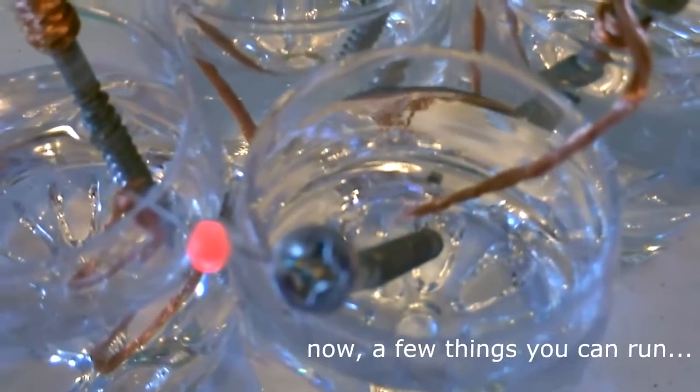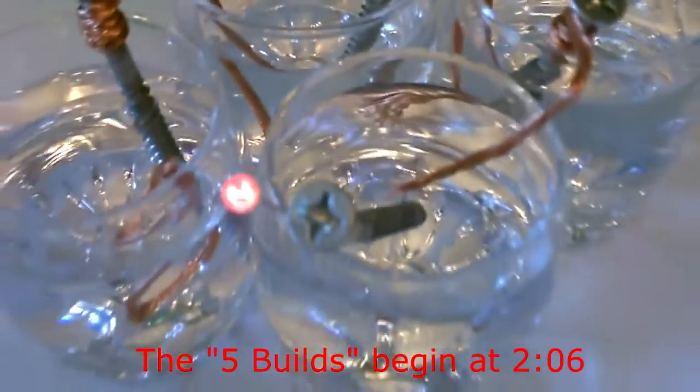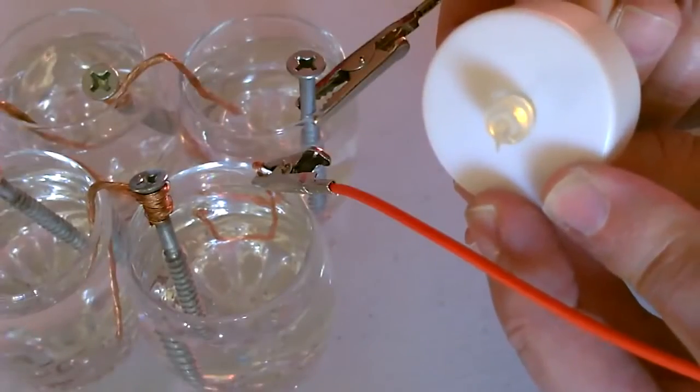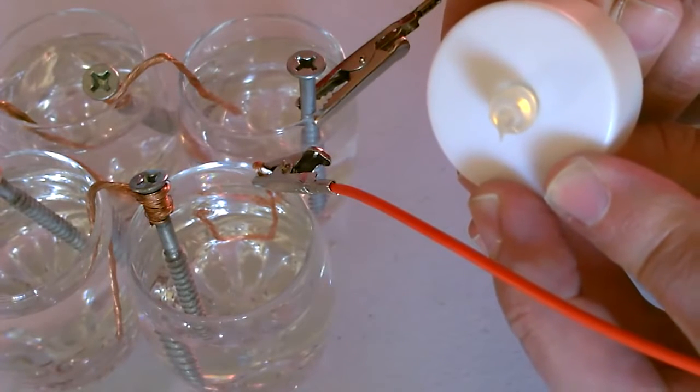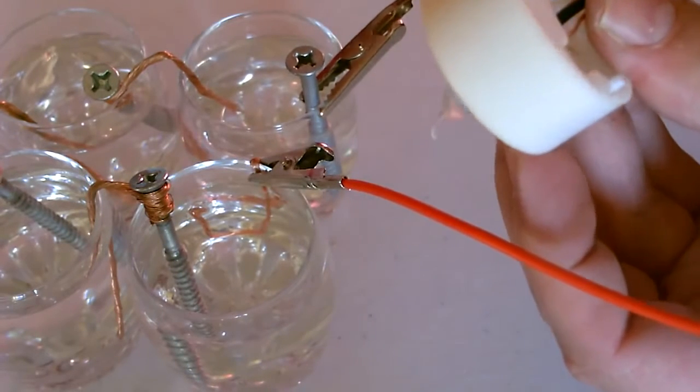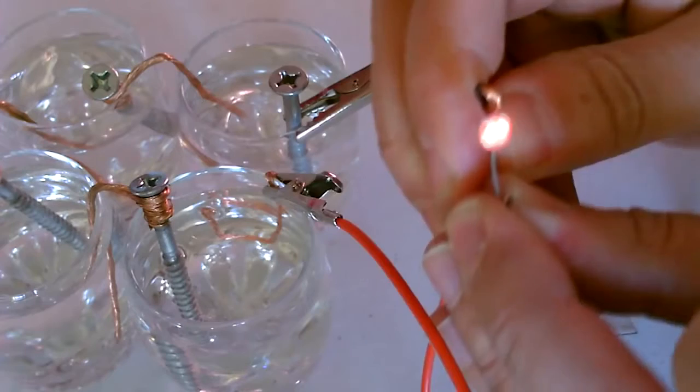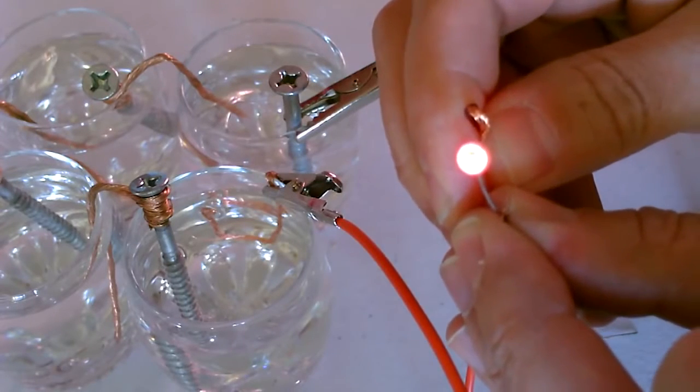All right, here's the red LED running off the water battery. Okay, here's the flickering tea light. I got it hooked up to the four cell vinegar battery right now, you can see that works pretty good. There's the red one with the vinegar battery, you can see that's pretty bright.